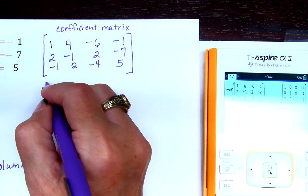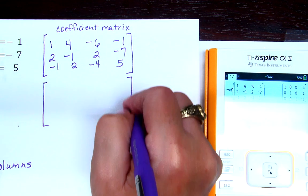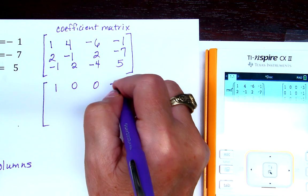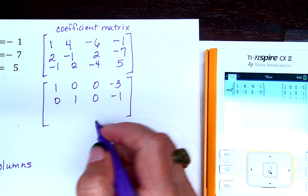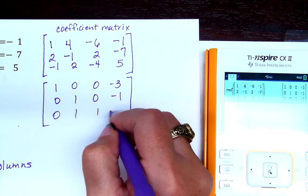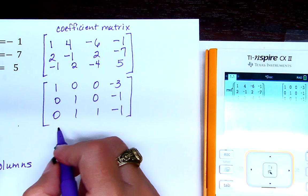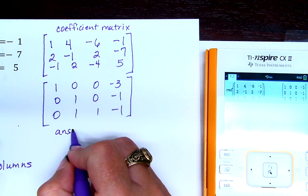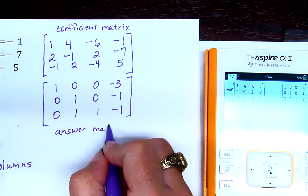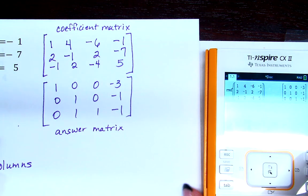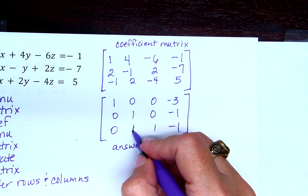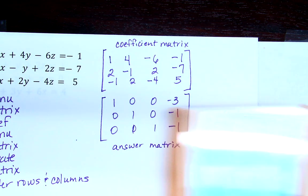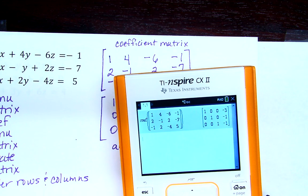1, 0, 0, negative 3. 0, 1, 0, negative 1. And 0, 0, 1, negative 1. This is my answer matrix. Now, oops, see what I did? It was supposed to be a zero. It was a zero on my thing. I just copied it wrong.